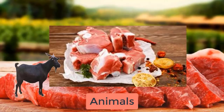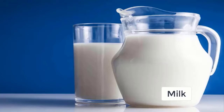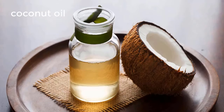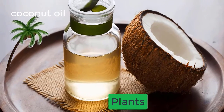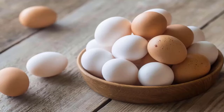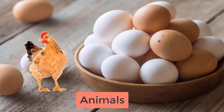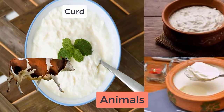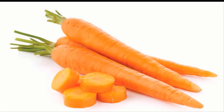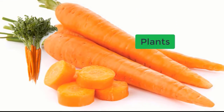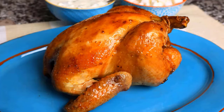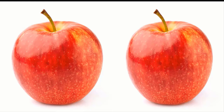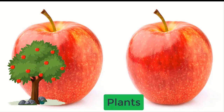We get buttermilk from animals. We get potato from plants. We get meat from animals. We get milk from animals. We get coconut oil from plants. We get egg from animals. We get curd from animals. We get carrot from plants. We get chicken from animals. We get apple from plants.